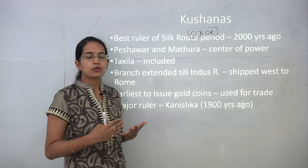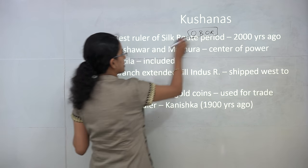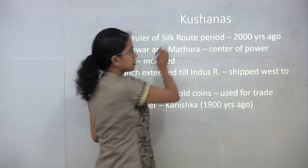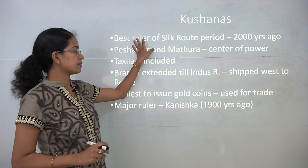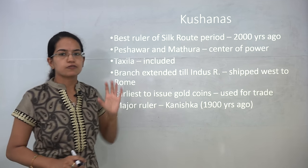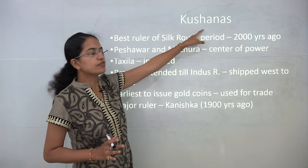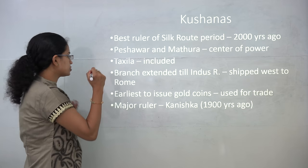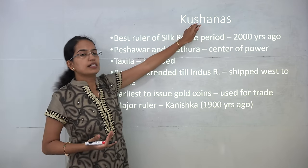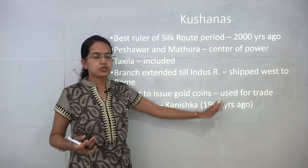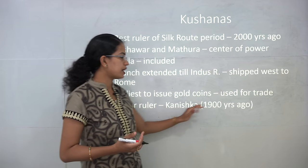In India, the Kushanas are known for their prominence during the Silk Route period, around 2000 years ago. The major centers of power were Peshawar in present-day Pakistan and Mathura in India, with Taxila also included later. The Kushanas were among the earliest to issue gold coins, which were used for trade during the Silk Route period. One of the major rulers was Kanishka, who came to power around 1900 years ago.